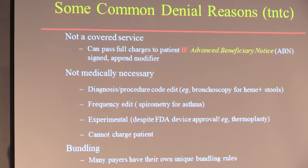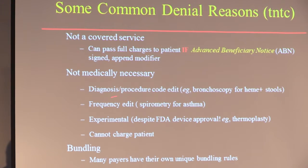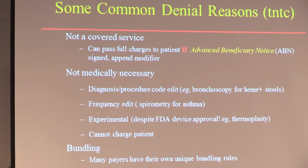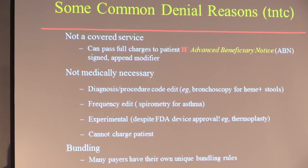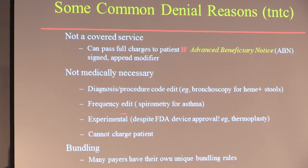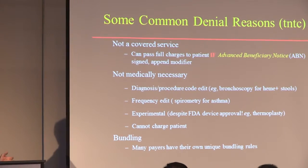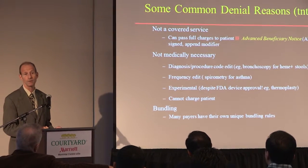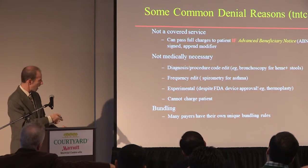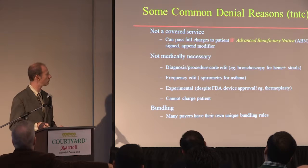This all assumes nothing's been denied. Common reasons for services to be denied: it might not be a covered service — and as long as you have the patient sign an advanced beneficiary notice ahead of time, you can pass those charges on to the patient. On the other hand, if you're denied payment because it's deemed not medically necessary, you cannot pass those charges on to the patient. Examples include diagnosis-procedure code edits — nobody's going to let you do a bronchoscopy for heme-positive stool — frequency edits, experimental devices, and bundling. In our field, we've had lots of experimental devices: fractional exhaled nitric oxide, bronchial valves, bronchial thermoplasty. Many payers will not follow Medicare's rules and will come up with their own bundling rules.